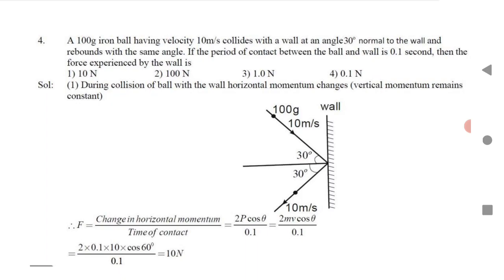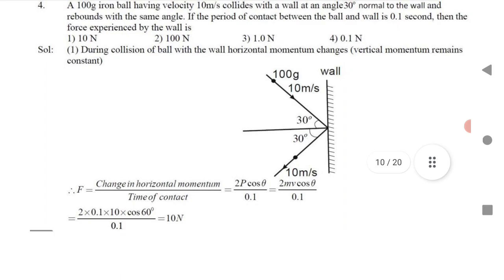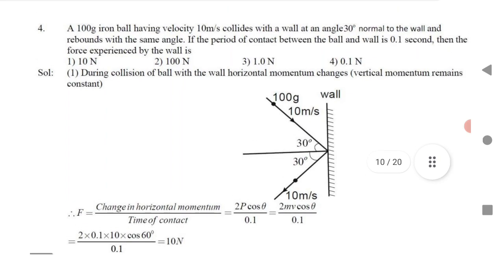Question 19: A 100 kg iron ball moving at 100 m/s collides with a wall at 30 degrees to the normal and rebounds at the same angle. Find the force experienced. Change in horizontal momentum divided by time of contact: 2p cosθ / t, where t = 0.1 s and p = mv. Substitute all values to get the answer.